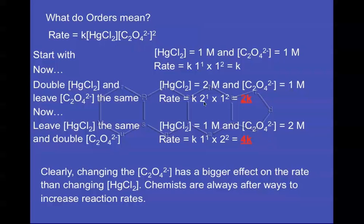Now let's look at what happens if we leave the HgCl₂ the same and just double the C₂O₄²⁻. Now we're doubling that to 2 molar, so now it's K times 1 to the 1 times 2 squared. So now that comes out to 4K. So you can see that doubling the C₂O₄²⁻ has the effect of quadrupling the rate. That is now we've got 4 times what we originally had. And that's for doubling this one. That's because of the squared here obviously.